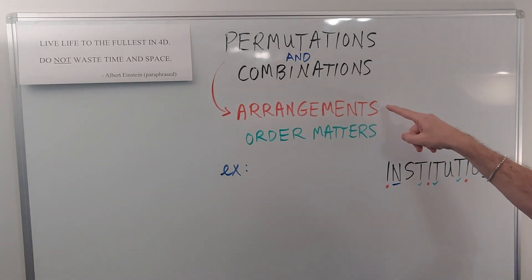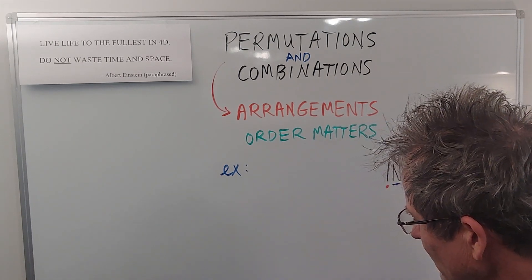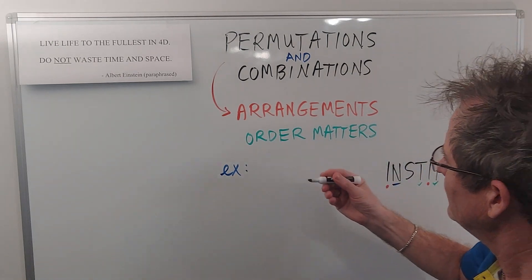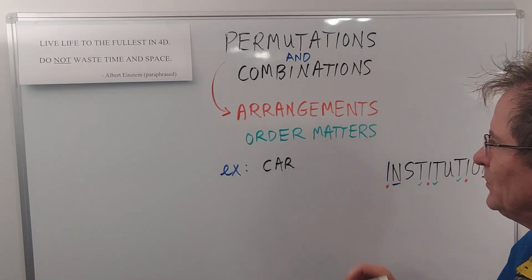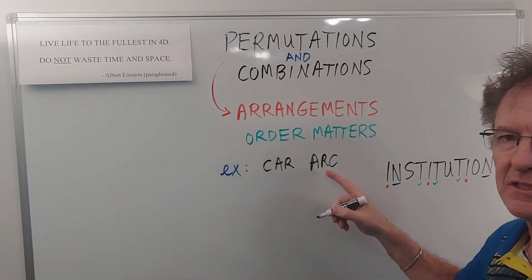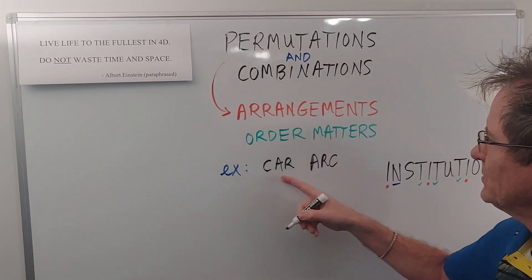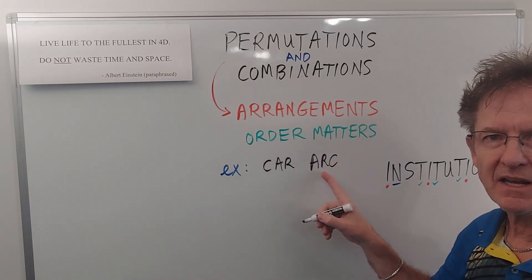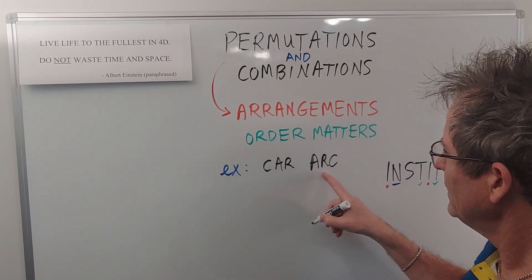Okay, permutations and combinations. Another word for permutations is arrangements, and order matters. So for example, let's say you had the three letters in the word CAR. If you rearrange them to get the word ARC, that's considered to be a different arrangement than CAR. When it comes to combinations, these are considered to be the same, but for permutations order matters.